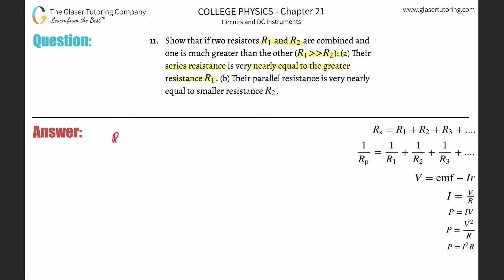Alright, so pretend R1, just make it up. Pretend R1 is a million, 1 times 10 to the 6th. And pretend R2 is going to be 1.